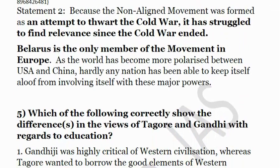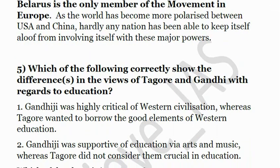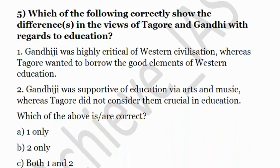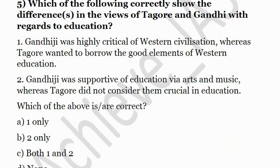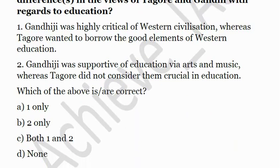The fifth question: Which of the following correctly shows the differences in the views of Tagore and Gandhi regarding education? First, Gandhi was highly critical of western civilization whereas Tagore wanted to borrow the good elements of western education. Second, Gandhi was supportive of education via arts and music whereas Tagore did not consider them crucial in education. Which statement correctly reflects their differences?